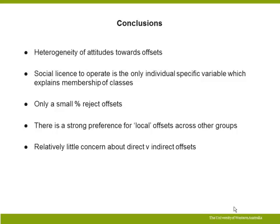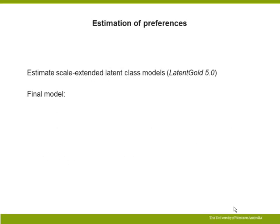Conclusions: we get this heterogeneity of attitudes towards offsets — you can't treat everybody the same, there are big differences. This social licence to operate, which was a bit speculative on our part in terms of doing that, actually is important and seems to explain the type of person they are in terms of class membership. Only a small percentage reject the offsets, which we were surprised but relieved about. There's a really strong spatial pattern for those people who are accepting them — you can generalise by saying everybody wants local and they don't like the offset moving to the Northern Territory or offshore. And there's relatively little concern about direct versus indirect offsets, which really surprised us. We thought people would actually be much more concerned about wanting on-ground action. It may be that we got that result by convincing them that all of these offsets achieve no net loss.